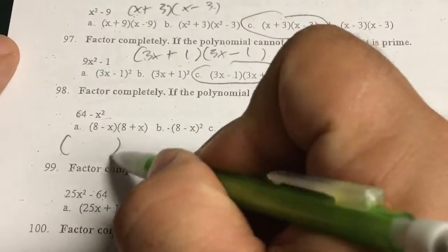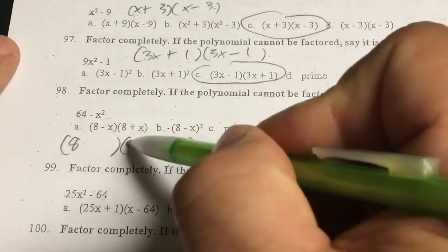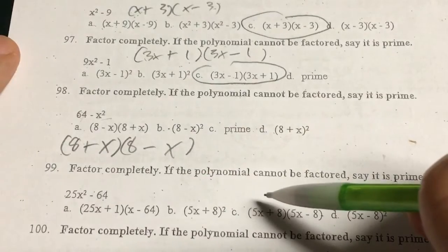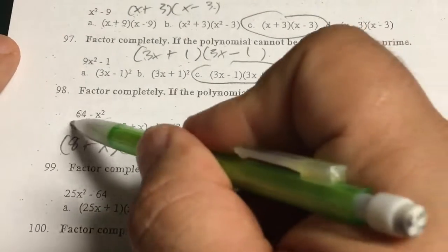It's backwards. What times what equals 64? 8 and 8. What times what equals x squared? x and x. Plus, minus. Choice A. Choice A, staring me in the face.